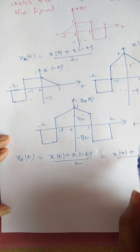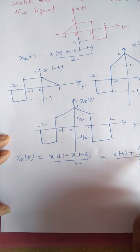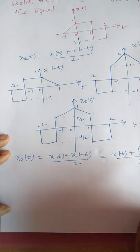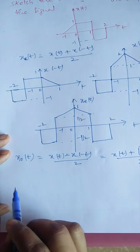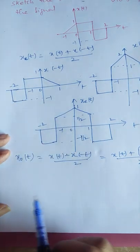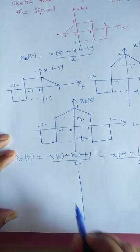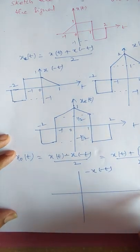Since we are familiar with addition of signals, we first write minus x(-t), then add that with x(t). To write minus x(-t): we already have x(-t), so we just reverse its amplitude — positive amplitudes become negative, and negative amplitudes become positive.